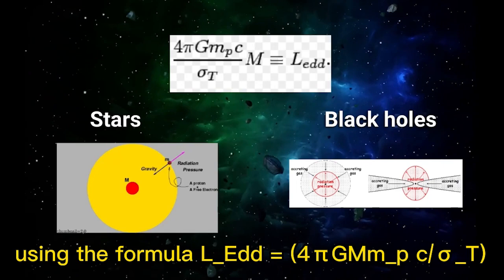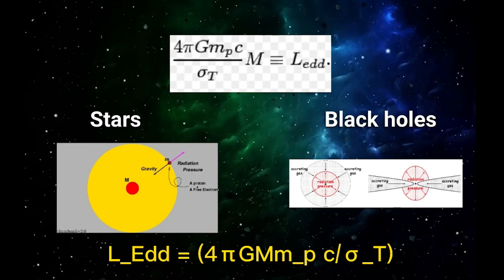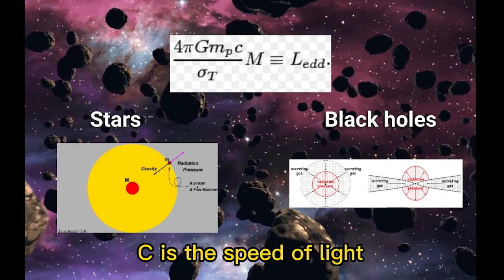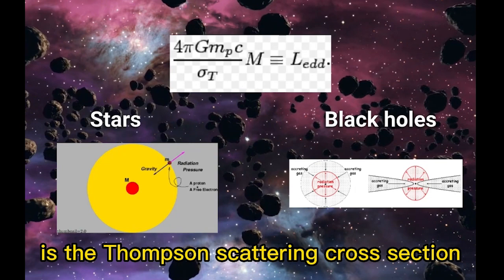Where L_Edd is the Eddington luminosity, G is the gravitational constant, M is the mass of the object, m_p is the mass of a proton, c is the speed of light, and σ_T is the Thompson scattering cross section. Thompson scattering describes how photons interact with electrons.